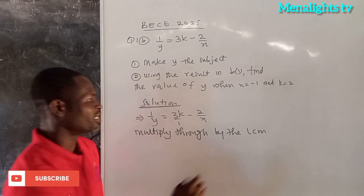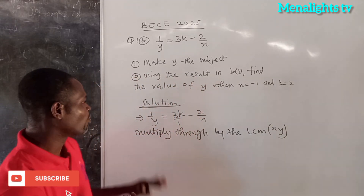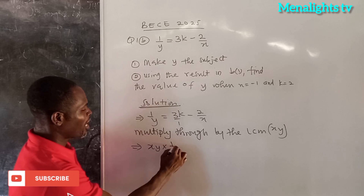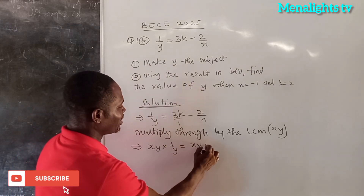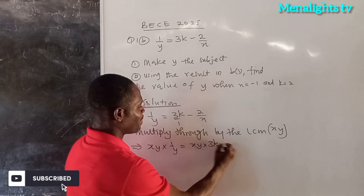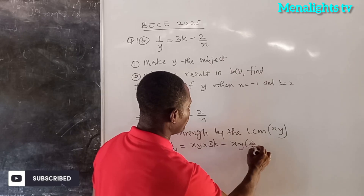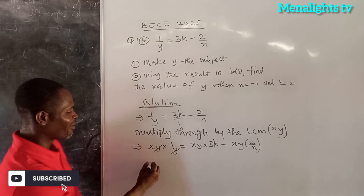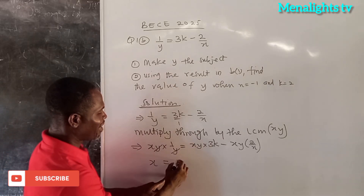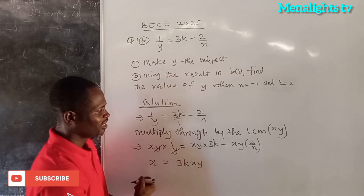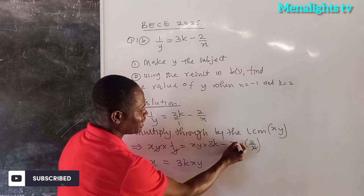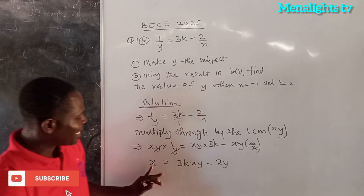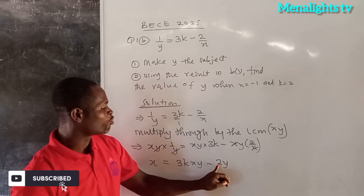We multiply by the LCM, which is XY. So XY times 1/Y gives X; XY times (3K − 2)/X gives 3KXY/X minus 2Y. The Y cancels on the left giving X. The X cancels on the right giving 3KXY. Then minus 2Y. So X = 3KXY − 2Y.